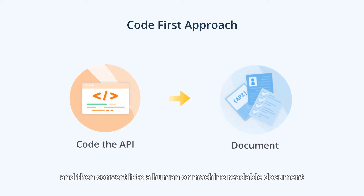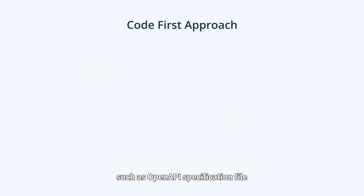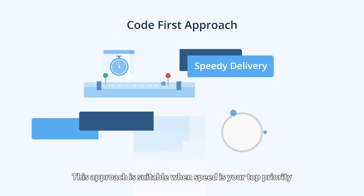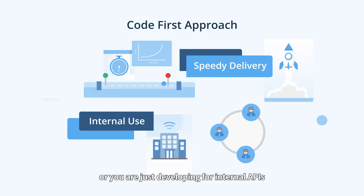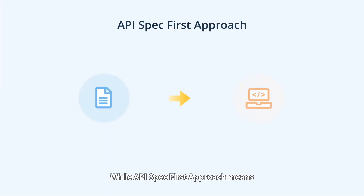The code first approach is when you directly code the API and then convert it to a human or machine readable document, such as an OpenAPI specification file. This approach is suitable when speed is your top priority, or you are just developing for internal APIs.